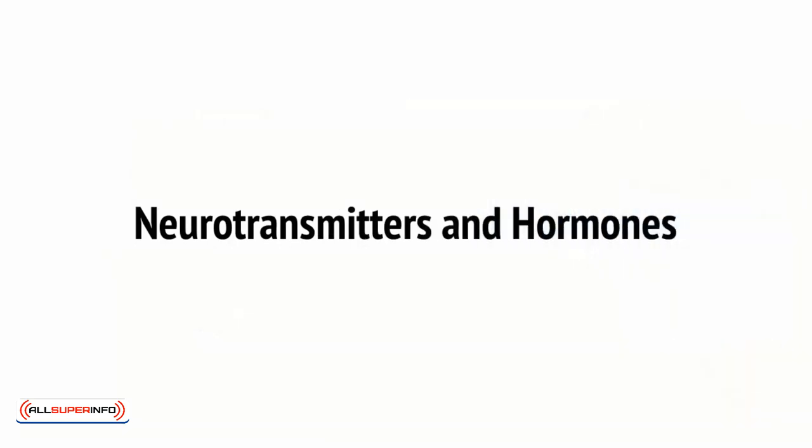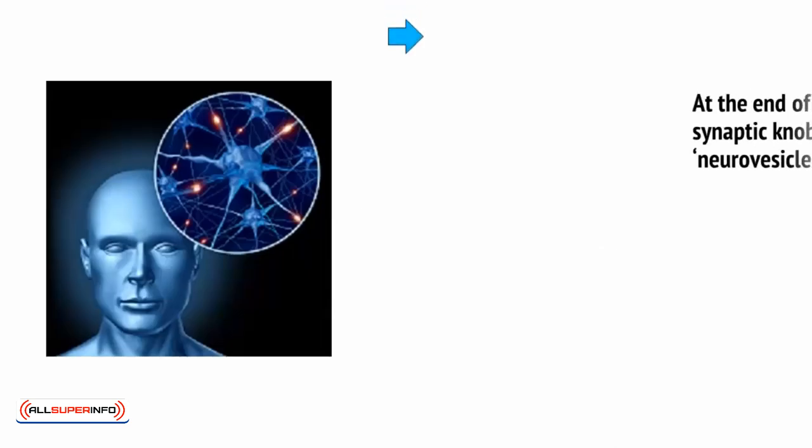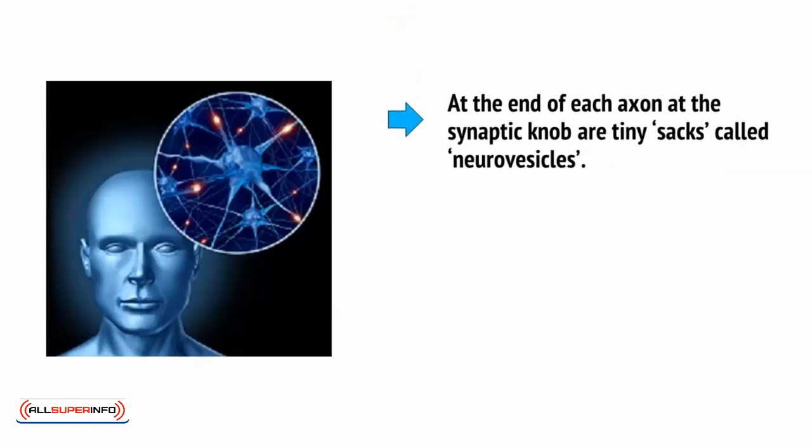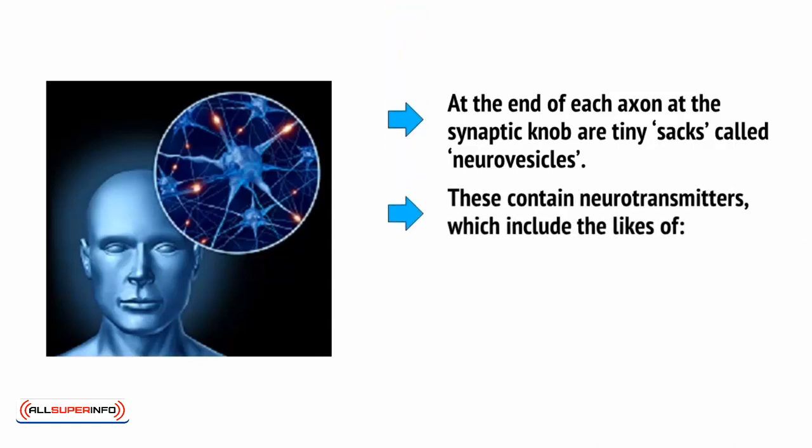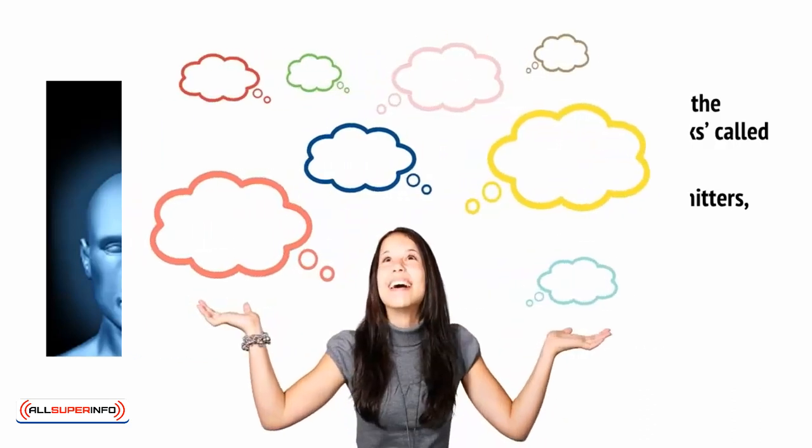But it's not just a current that jumps across the synaptic gap during communication between cells. At the end of each axon at the synaptic knob are tiny sacs called neurovesicles. These contain neurotransmitters, which include the likes of dopamine, serotonin, and norepinephrine.